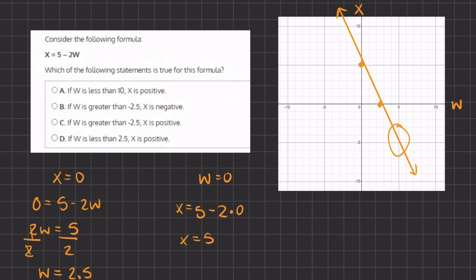And now let's move on to B. Alright, if w is greater than negative 2.5, x is negative. Well, negative 2.5 on the w axis is right over here. And if it is greater than negative 2.5, the answer is saying that x is negative. Well, we see here that x is positive and then it becomes negative once it reaches this 2.5. Therefore, B is also incorrect.